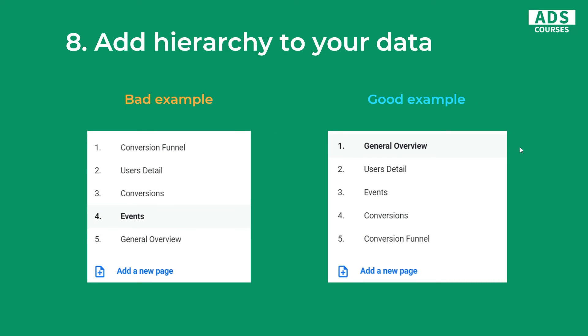Number eight is add hierarchy to your data. Here I talk about the pages, because you can create multiple pages within the same report in Google Data Studio, and you should name and order them properly. In the bad example, the first page is 'Conversion Funnel,' then 'Users Detail,' 'Conversions,' 'Events,' and 'General Overview' is the last one — it doesn't make any sense, it's chaotic. In the good example it's more like a book: we've got 'General Overview' first with the most crucial data, then we go deeper to 'User Details,' then even deeper to 'Events,' and then 'Conversions' and 'Conversion Funnel.'